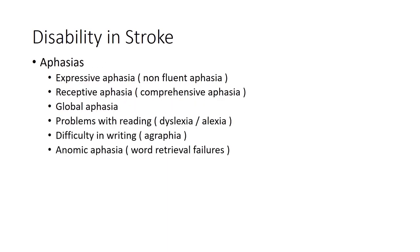The ability to communicate successfully is an essential component of independence. Aphasias are common after stroke and include expressive aphasia, receptive aphasia, and global aphasia. Patients may also have problems with reading — called dyslexia or alexia — or difficulty in writing, called agraphia. Anomic aphasia is a specific type and can be part of all the other types of aphasias.